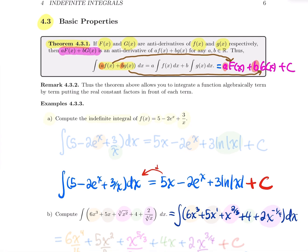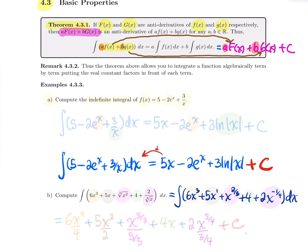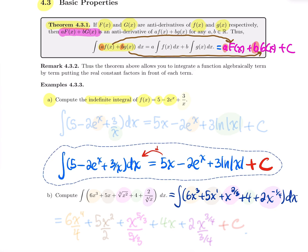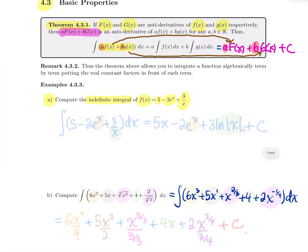Let's do some examples to end the section on basic rules and properties for integration. Let's compute the indefinite integral of 5 minus 2e^x plus 3 over x. Using the right notation, we compute the integral of 5 minus 2e^x plus 3 over x. The 5 simply goes to 5x — that's our first formula.